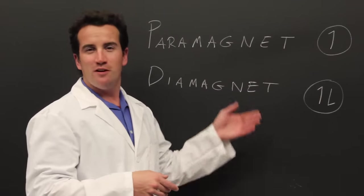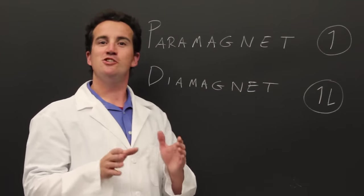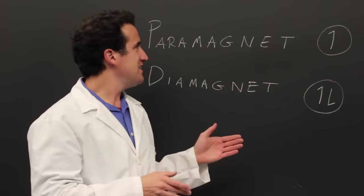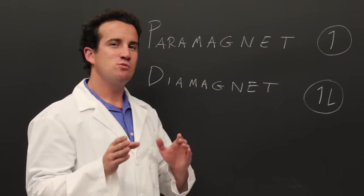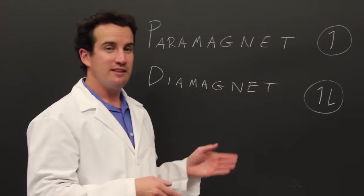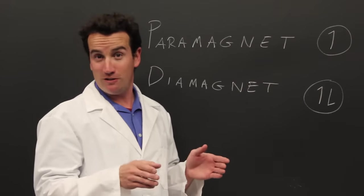In conclusion, when something is a paramagnet or a diamagnet, it tells you what its electrons are doing. In the case of a paramagnet, it has at least one unpaired electron. In the case of a diamagnet, it has mostly paired electrons.